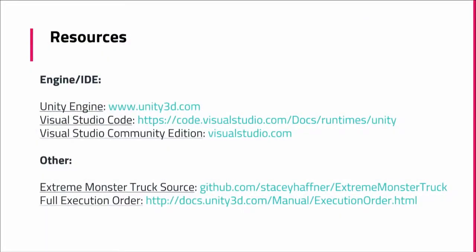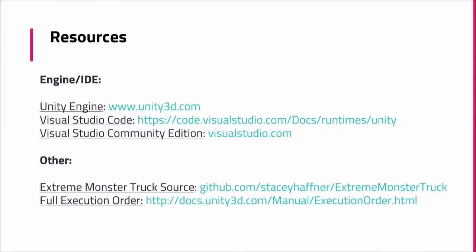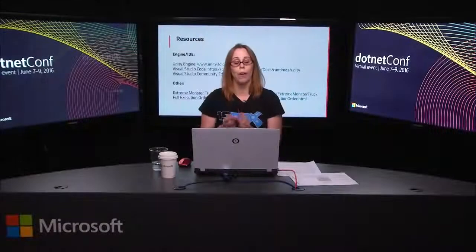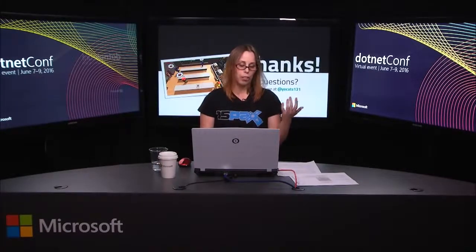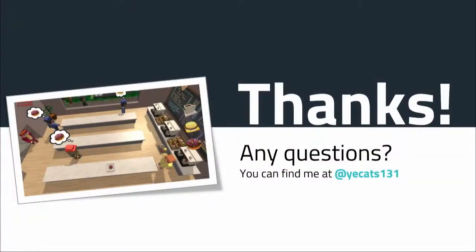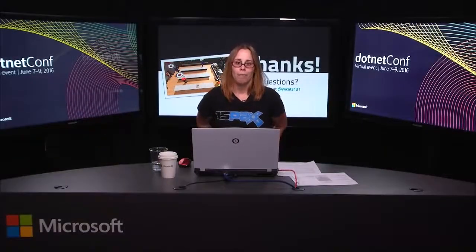For resources: get the Unity engine at unity3d.com. On Windows, you'll get Visual Studio Community as an option during install. On Linux or Mac you can use Visual Studio Code, and Unity also comes with MonoDevelop. The Extreme Monster Truck source is live on GitHub so you can dig deeper into the code. There's also a link for the full execution order diagram, which covers much more than we looked at. Find me on Twitter with questions, and feel free to share anything you create. Thanks!